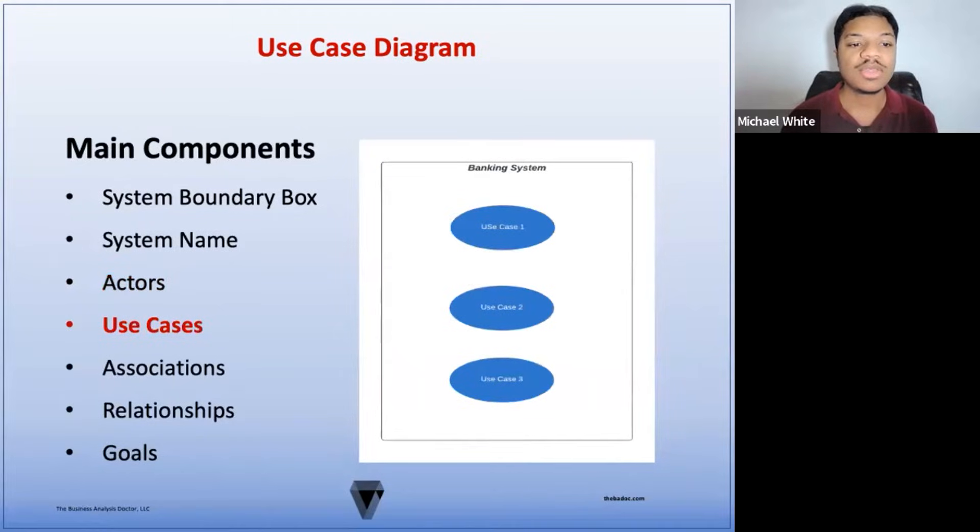The next component is the actual use cases. A use case is the action taken by an actor in order to complete or accomplish a task. Each use case should map to a functional requirement. Use cases are represented by a horizontal oval. And use case names generally include a verb that describes an action and a noun that describes an element that is being impacted by the use case.